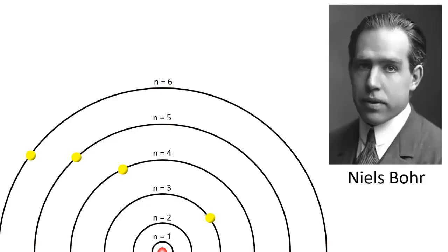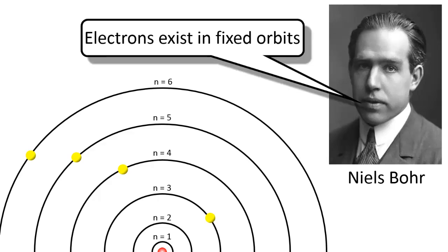That's where Niels Bohr comes in. Bohr proposed a model in which electrons could only exist in certain orbits at certain fixed distances from the nucleus. He also argued that the energy of an electron was limited to certain discrete values. In other words, the location and energy of electrons is quantized.